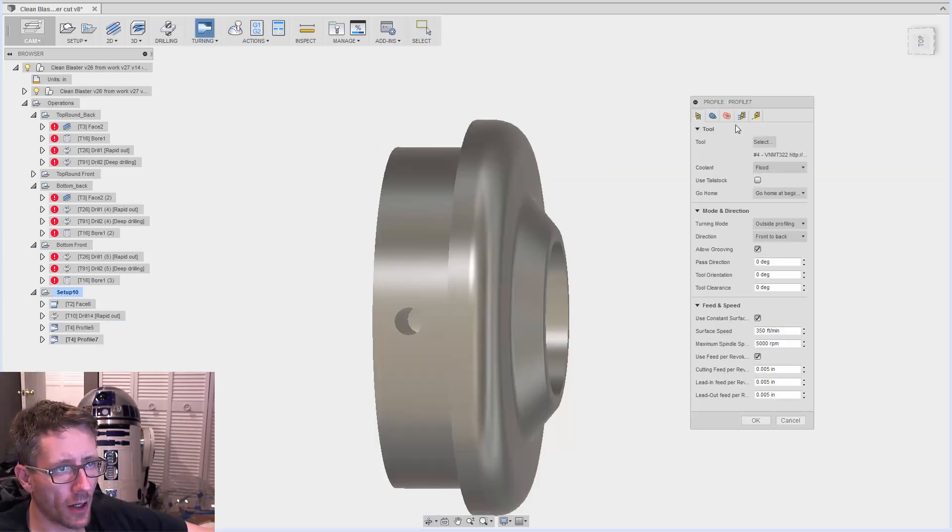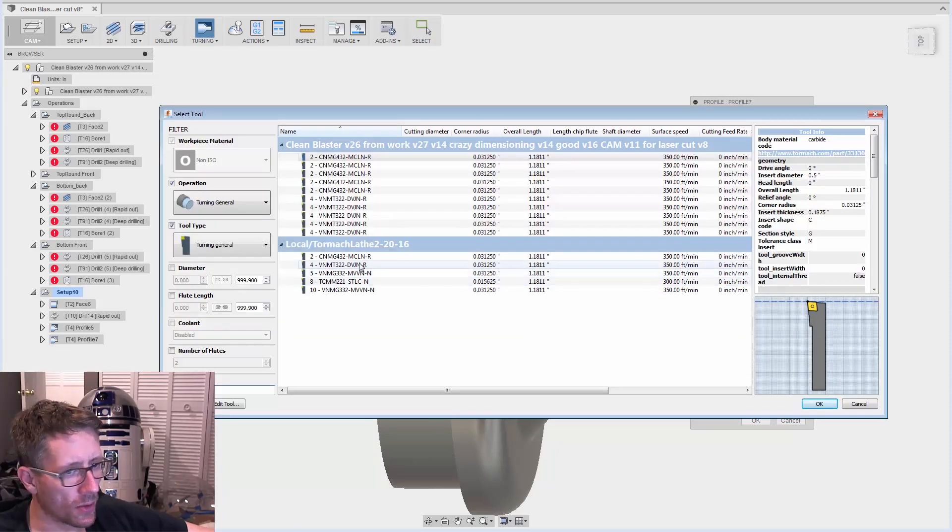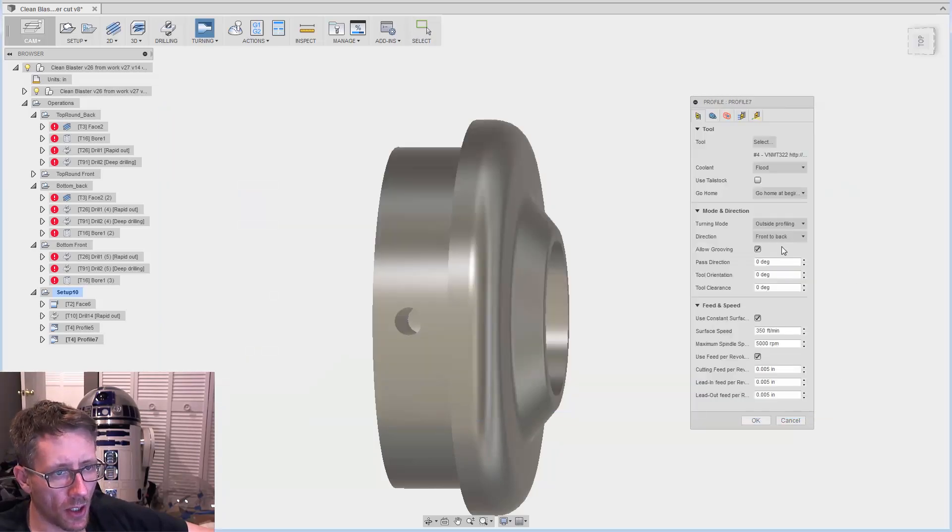Now next, let's add another profile using the same tool. I just got to figure out how to keep this as a default so I don't keep typing the same thing. We don't want to allow grooving - we want the tool to basically cut this and not drop down here because we're going to cut that out with a different operation.